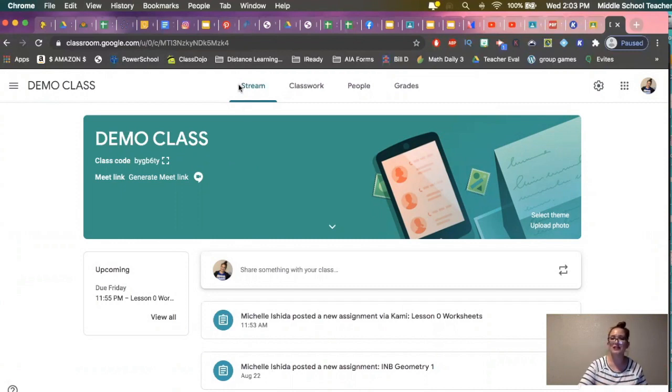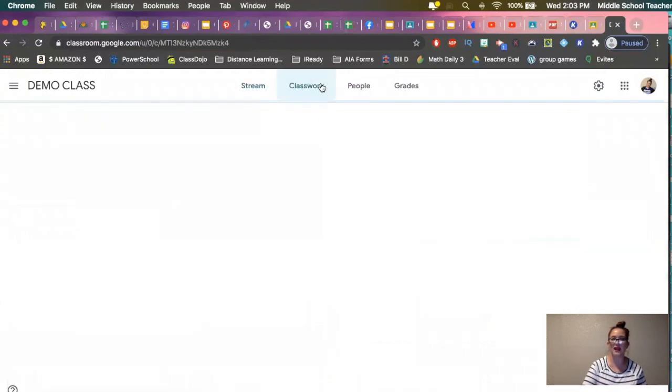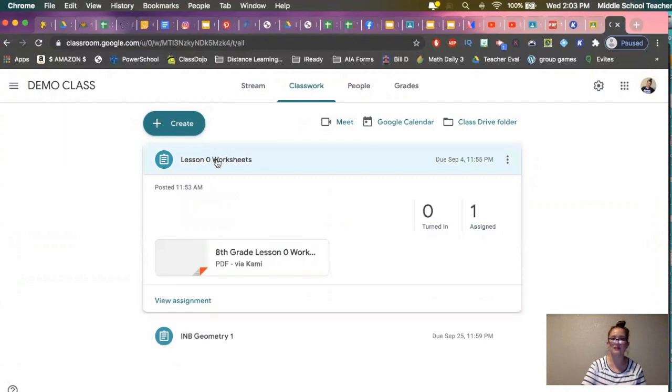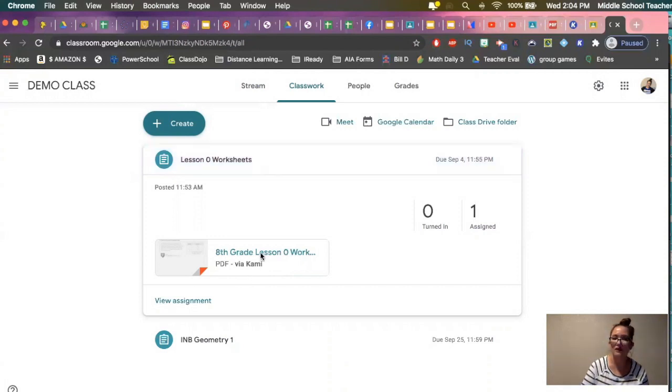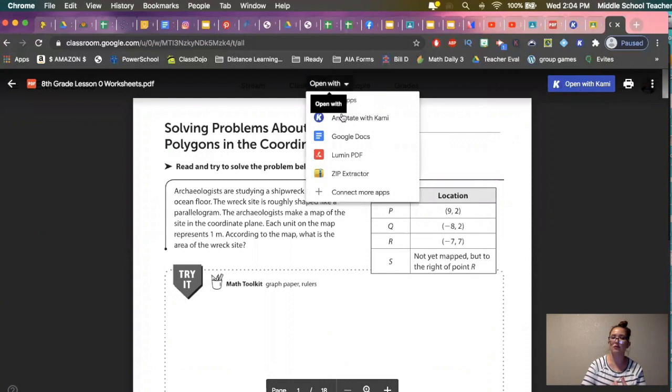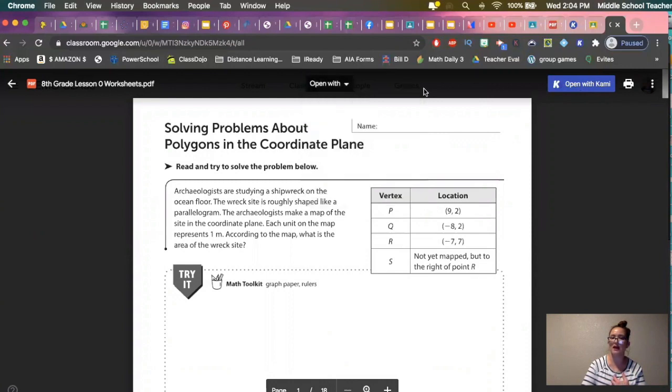So we're going to start in our demo class, and I have a classwork assignment, the Lesson Zero Worksheets. Right here it says it's a PDF, and you can open it via Kami. So I'm going to click on it right here. Sometimes in the student view, this button is not there. If I hit this button right here, it's going to open my screen in the Kami extension. But just in case that's not there, you can always hit this where it says Open with, Annotate with Kami.